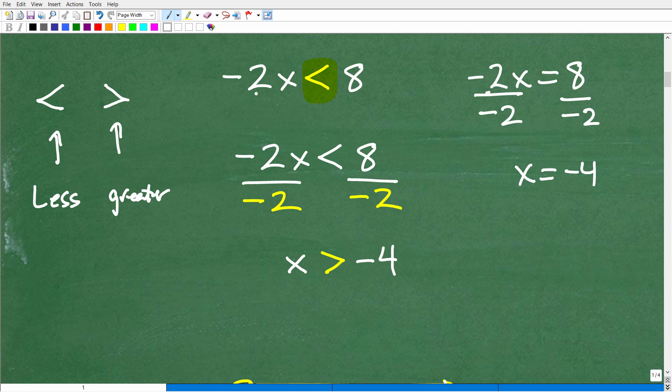All right, so here I have negative 2x is less than 8. I'm kind of thinking of this as an equation, so I'm going to divide both sides of the inequality by negative 2. All right, so most of us kind of think about this problem. They're like, okay, I know what to do here.